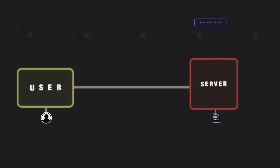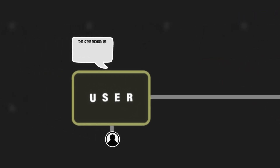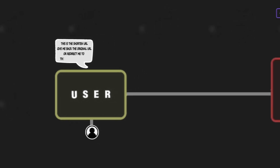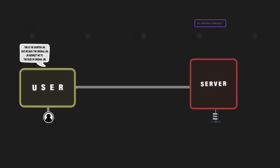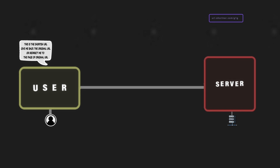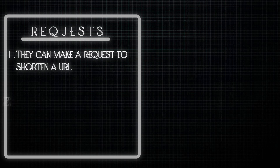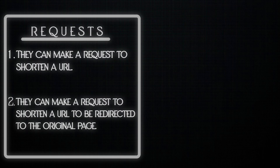The user comes to our server, makes a request, and gets back the shortened form of the URL. When they come back again with the shortened URL, they make another request: 'Give me back the original URL, or redirect me to the original page.' There are two kinds of requests: number one, shorten a URL; number two, use the shortened URL to be redirected to the original page.